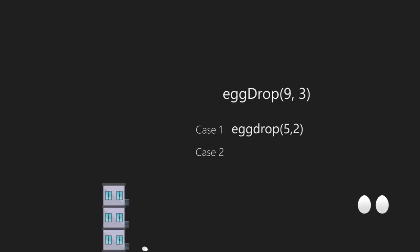For case two — the egg doesn't break — we look at the upper part of the building, and the corresponding function call will be egg_drop(3, 3). For any floor there will be two such cases. From any floor we need to cover both possibilities: the egg breaking as well as the egg not breaking, even though only one will actually occur.